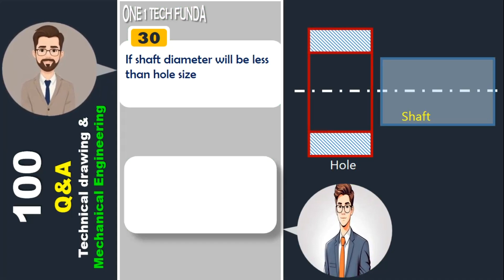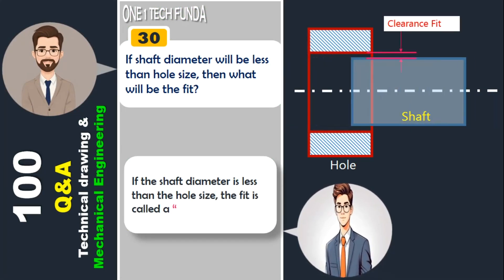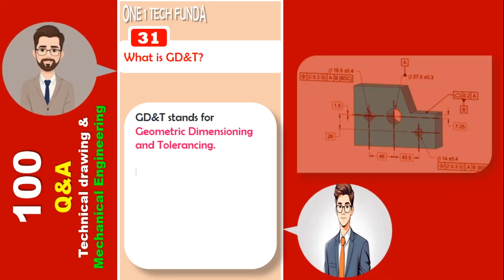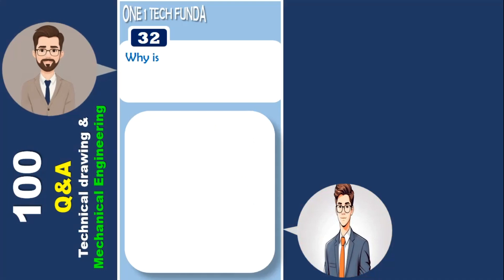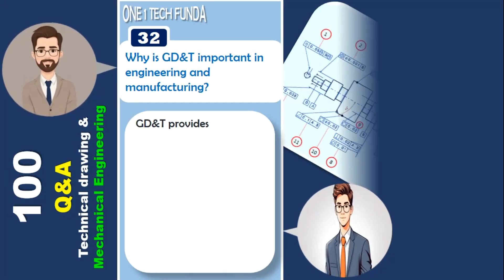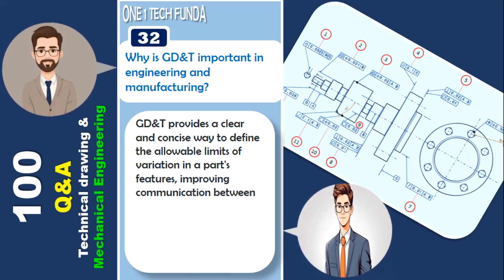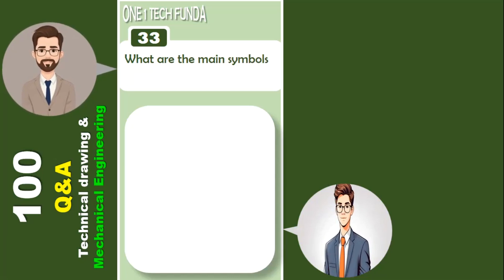If the shaft diameter is less than the hole size, the fit is called a clearance fit. What is GD&T? GD&T stands for Geometric Dimensioning and Tolerancing. Its purpose is to convey information about the allowable variations in the geometry of a part, ensuring that it fits and functions properly within an assembly. GD&T provides a clear and concise way to define the allowable limits of variation in a part's features, improving communication between designers and manufacturers, reducing misunderstandings, and ensuring part interchangeability.